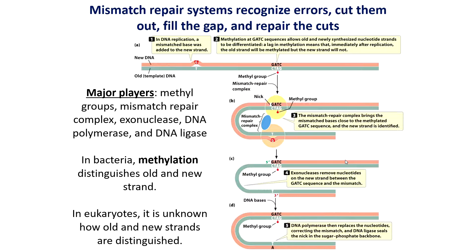One of these systems is called mismatch repair, where the mismatch repair system of proteins will recognize errors as a defect in DNA structure, cut them out, fill in the gap, and repair the cut. The major players involved are methyl groups in bacteria — not necessarily required for eukaryotes but required for bacteria — the mismatch repair complex, which is a complex of proteins that binds to the error and creates a cut in the mutated strand, an exonuclease that removes nucleotides on the new strand where the error occurred, DNA polymerase that fills in the gap, and DNA ligase that makes the final phosphodiester bond.